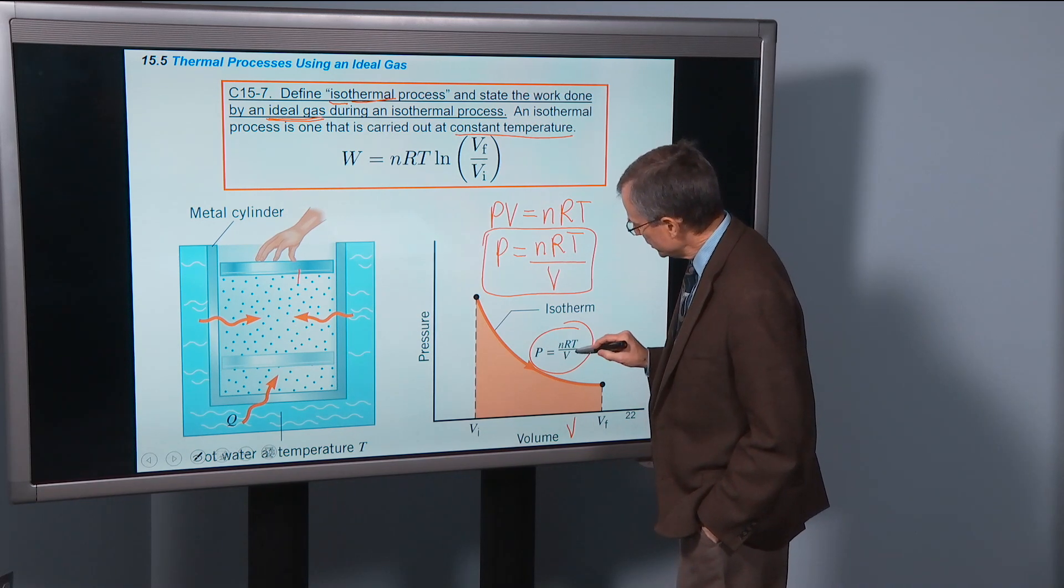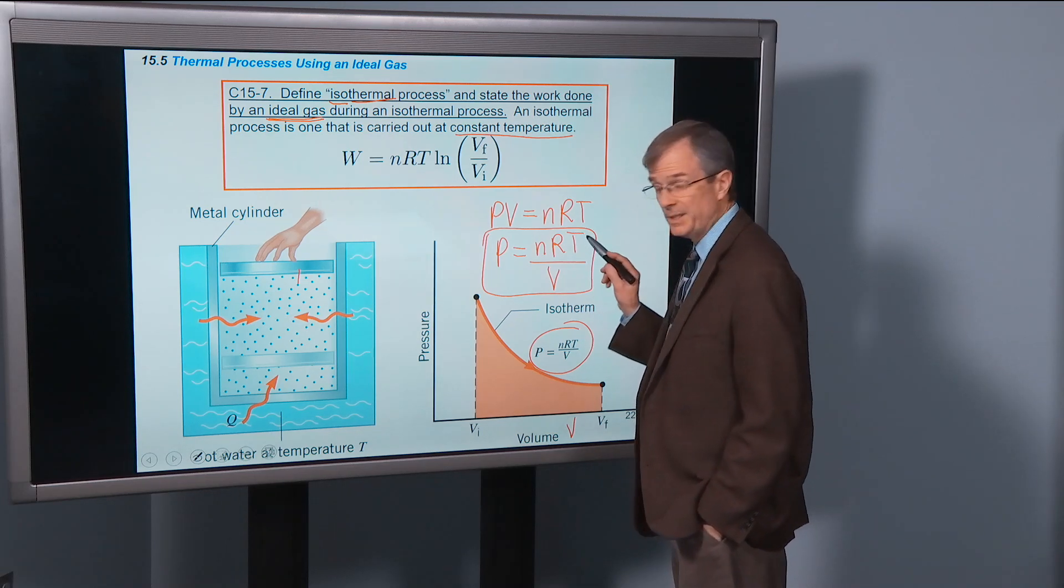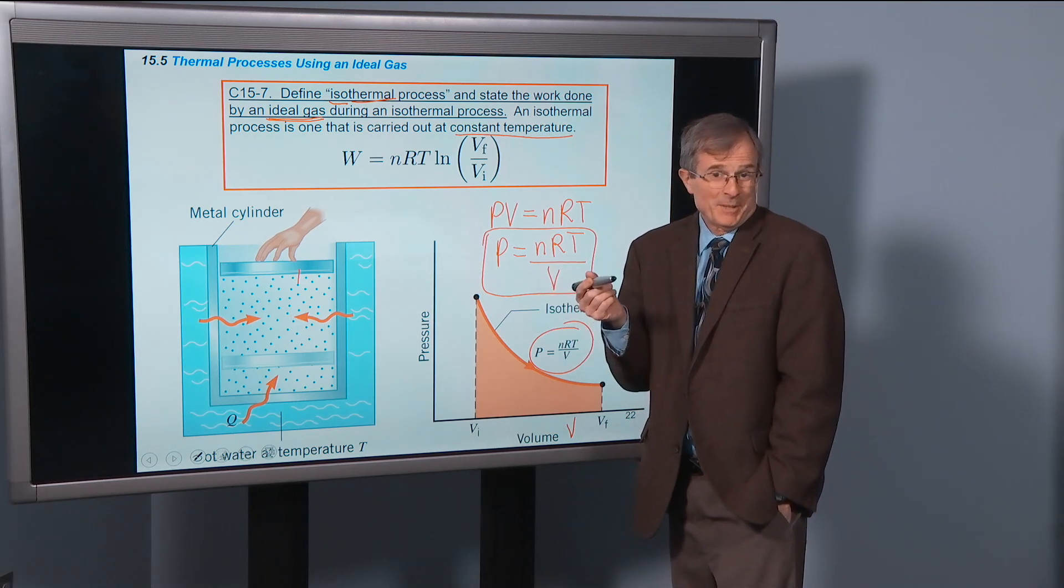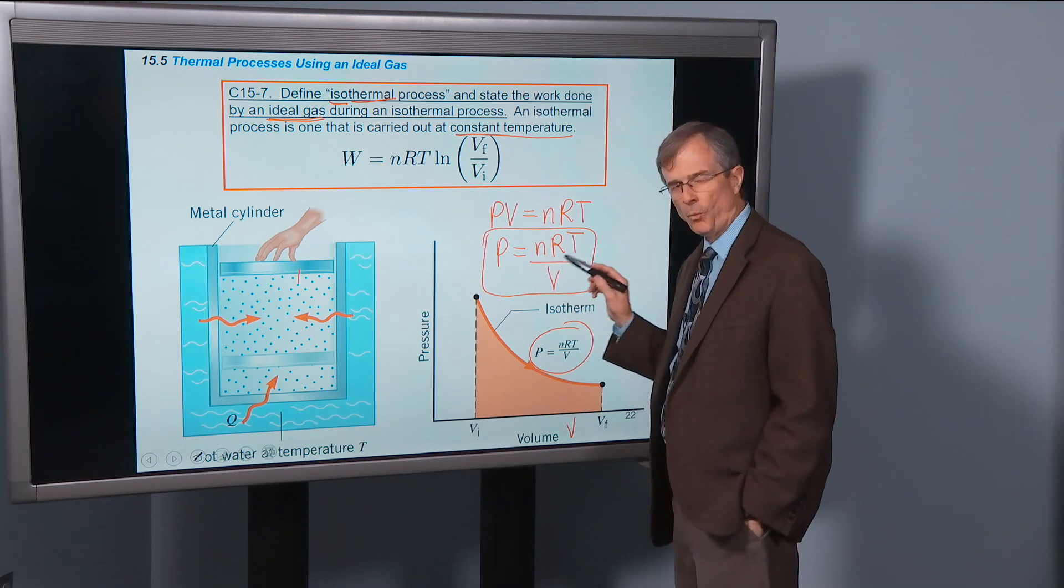Well the pressure, if n and R and T are all constants, and T is a constant, that's what we mean by isothermal, then the pressure goes like 1 over V.